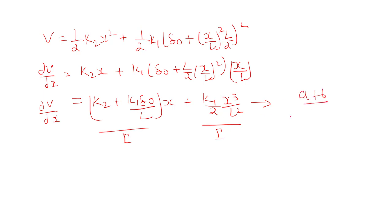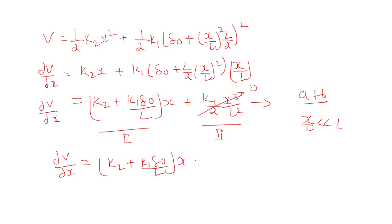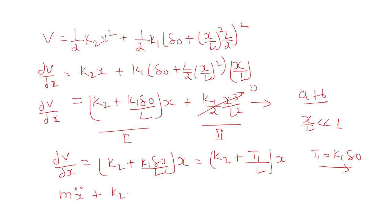The expression dV/dx consists of two terms. Since x/L is very much smaller than one, the higher-order term (K1/2)·x³/L² is negligible and we can ignore it to linearize the equation. So dV/dx simplifies to (K2 + K1·delta-naught / L)·x, which can also be written as (K2 + T1/L)·x, since T1 equals K1·delta-naught. Substituting into the Lagrangian equation gives: M·x-double-dot + (K2 + T1/L)·x = 0.